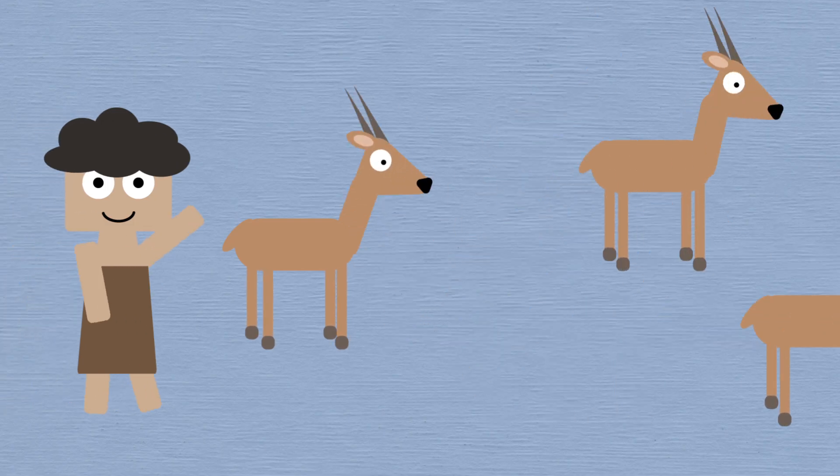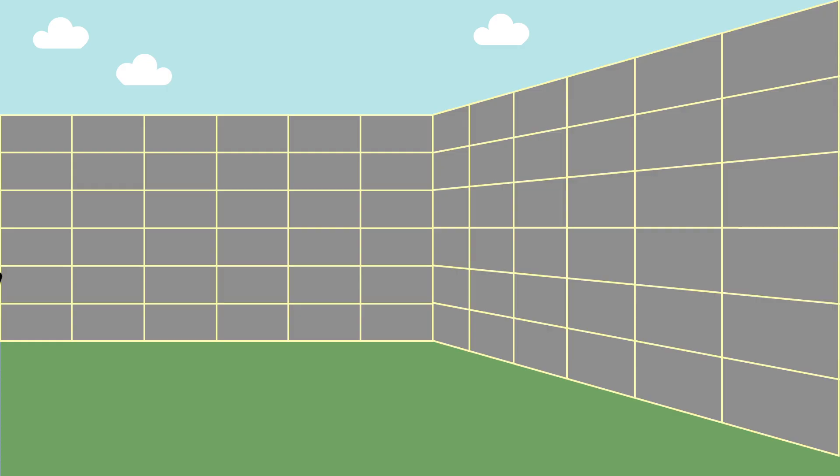They can run up to 50 miles per hour and will also panic and blindly bash themselves against walls to try to escape.